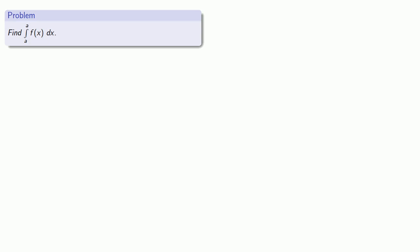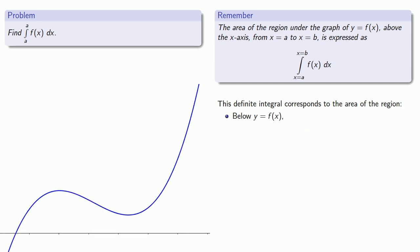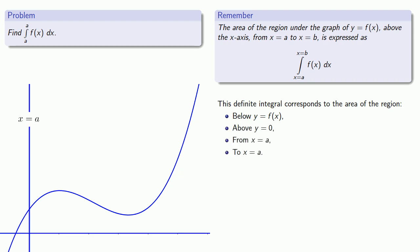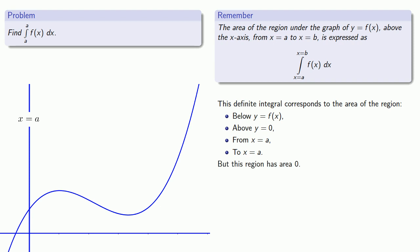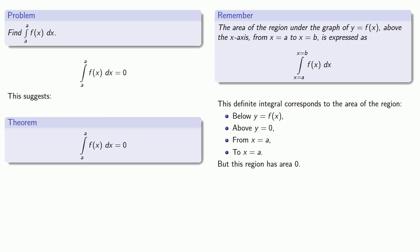It helps to remember the geometric interpretation of the definite integral as the area of a region. This definite integral corresponds to the area of the region below the graph of y equals f of x, above y equals 0, from x equals a to x equals a. That means the region is just a line segment, which has area 0. And so the definite integral also has value 0. This suggests that the definite integral from a to a of anything is equal to 0.